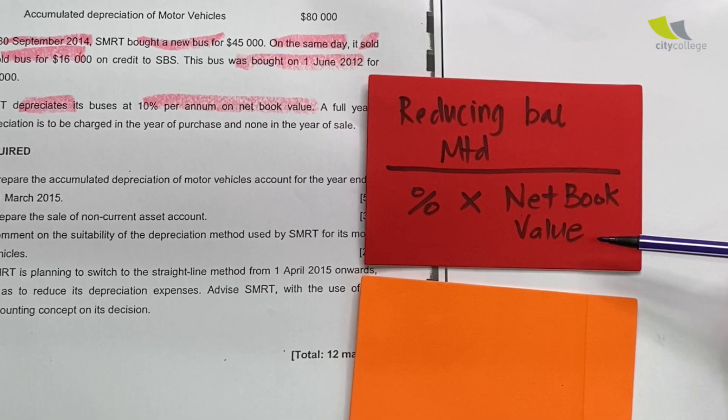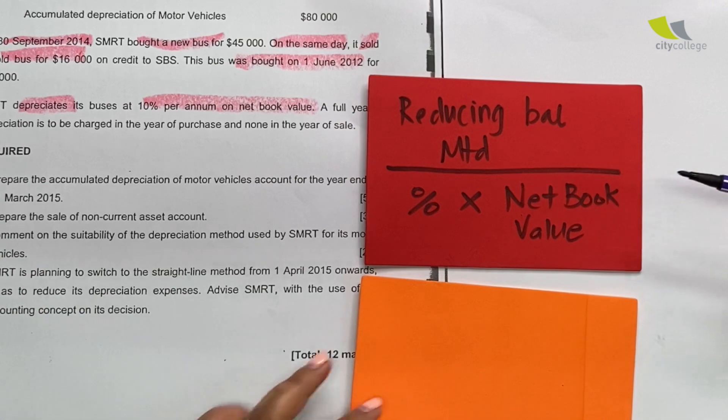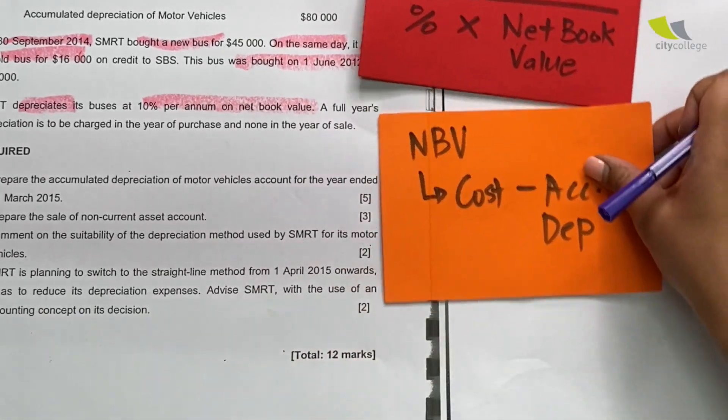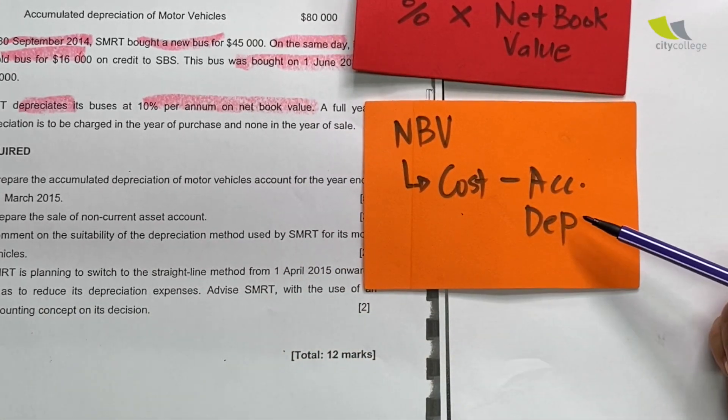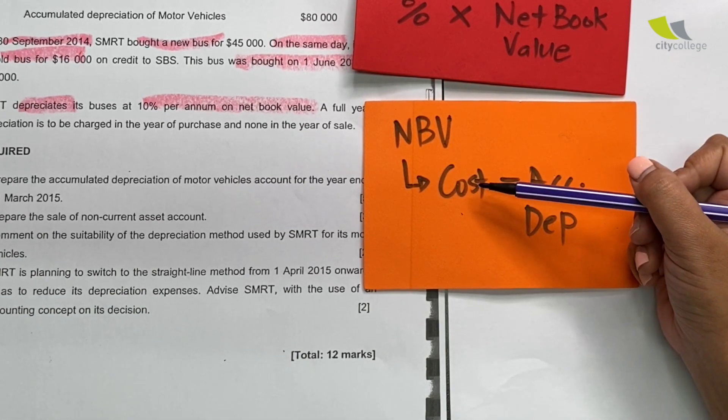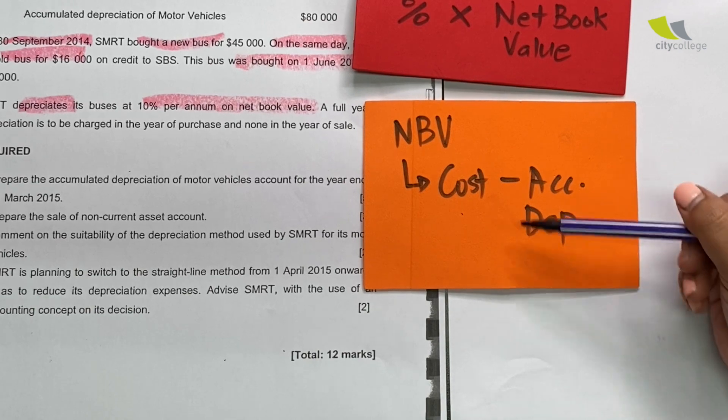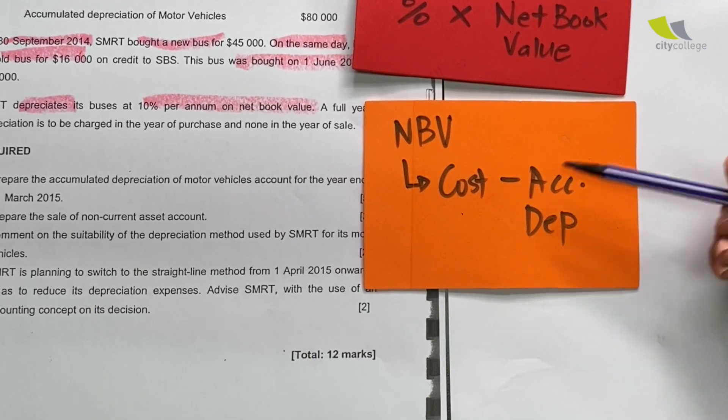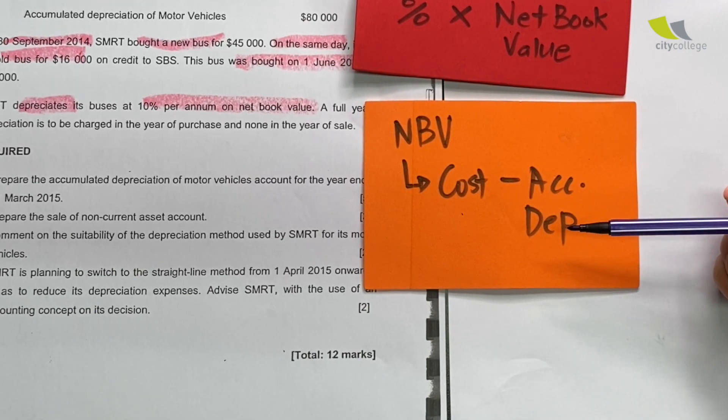When we see the keyword net book value, it actually means we are using the reducing balance method because the formula of the reducing balance method is percentage times net book value. So the business is actually using the reducing balance method. What is net book value? For those who are unsure, it actually refers to the cost minus the accumulated depreciation.